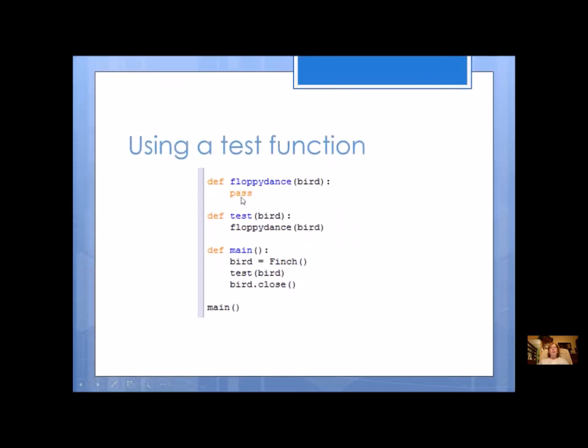So maybe I'm going to try a new function called floppy dance. Notice I took off twirl, and I'm just going to test floppy dance, so this can save some time. I know twirl works. I don't need to test it anymore. I'm just going to test my one new function.